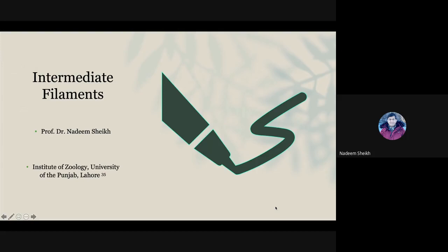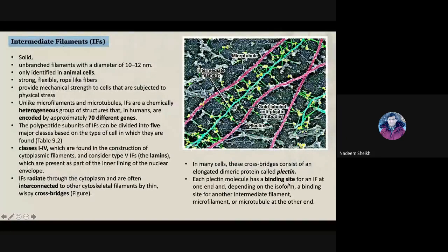We are discussing the cytoskeleton, which includes microtubules, microfilaments, and intermediate filaments. As the name indicates, intermediate filaments are structures intermediate between the different cytoskeletal elements. These filaments are solid, as compared to microtubules which are hollow from the central area — so these are solid and unbranched.